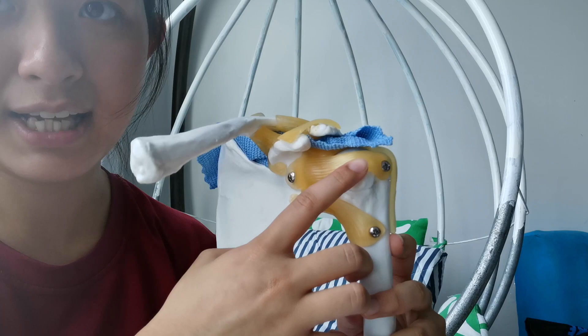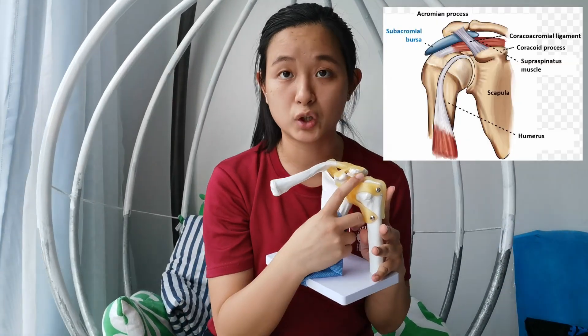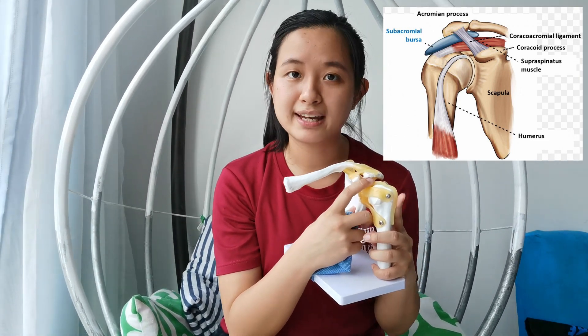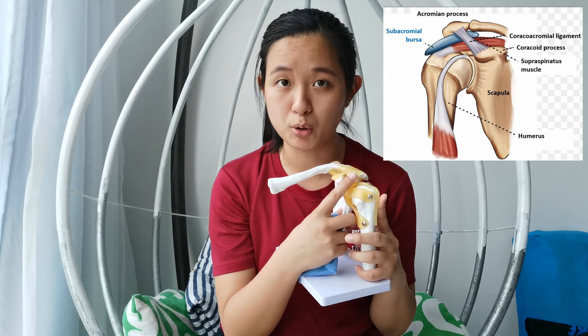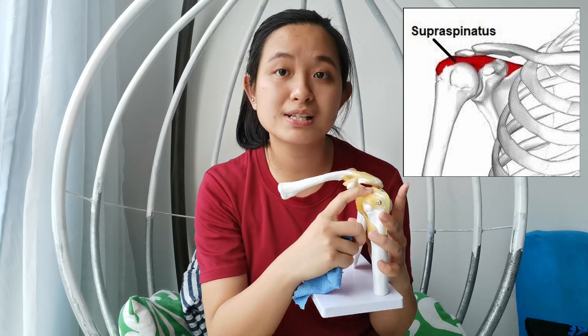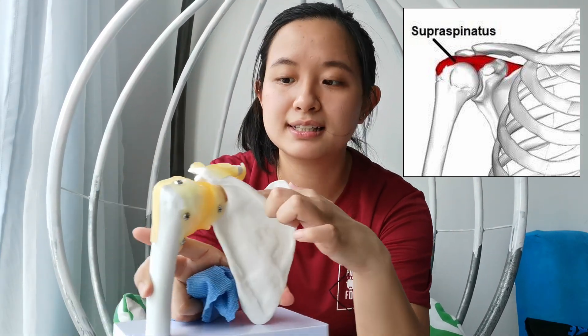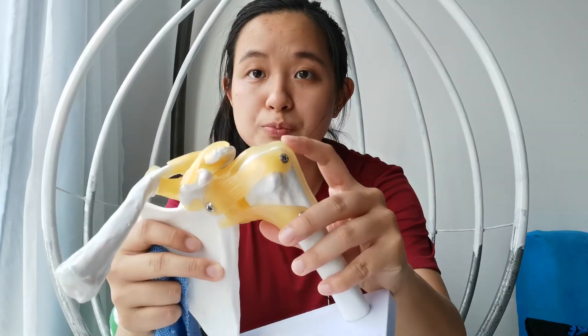Now what are those structures underneath? First, we have the bursa — a fluid sac located here, acting as a shock absorber to reduce friction between muscles and bones. Second, we have a major muscle called the supraspinatus, which runs above the scapula and inserts into the greater tubercle of the humerus. It is often the supraspinatus that is being impinged. We also have the bicep tendons that run over that structure.